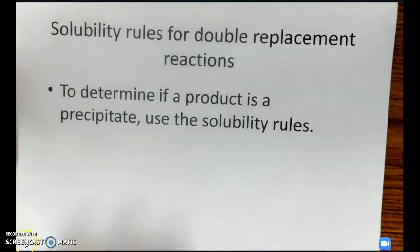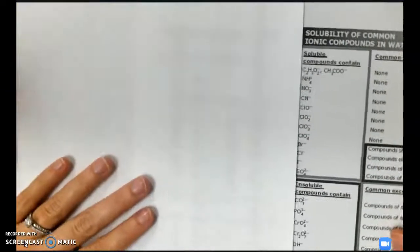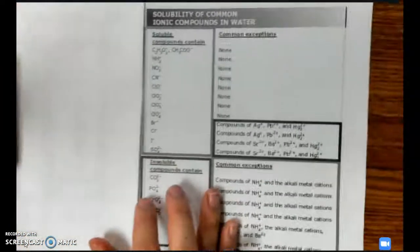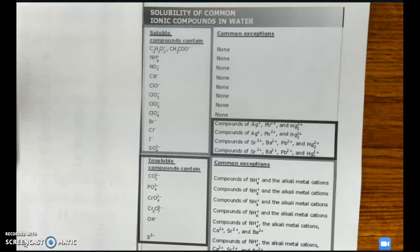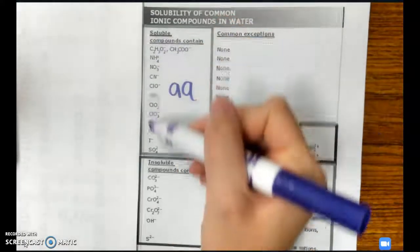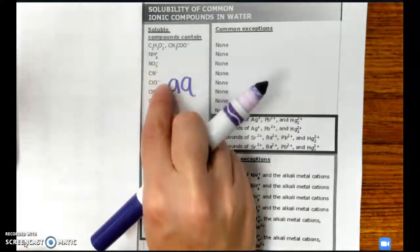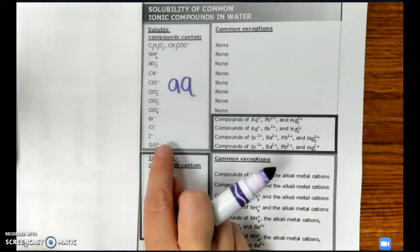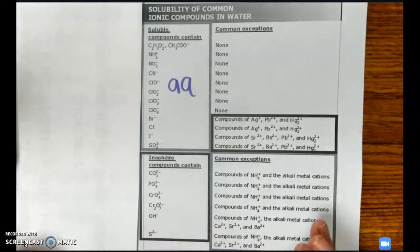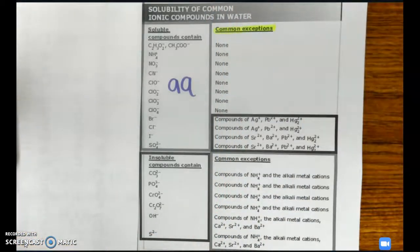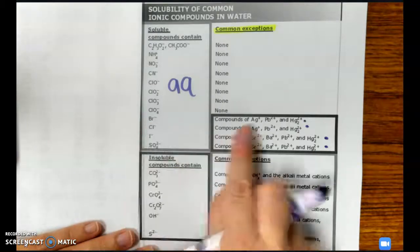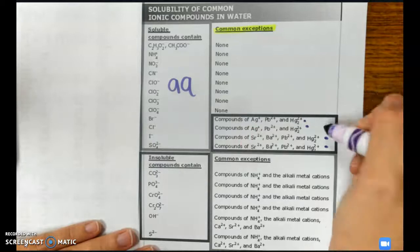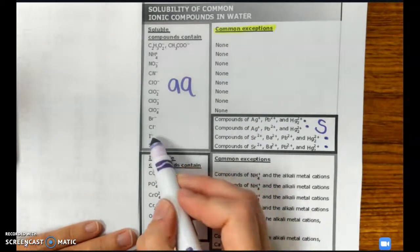If you go to the back of your periodic table, you should see a solubility chart. The top section says 'soluble compounds contain.' Soluble means aqueous — it can dissolve in water. So compounds containing ammonium, nitrate, cyanide, all chlorates, bromine, chlorine, iodine, and sulfate are all aqueous. Over here it says 'common exceptions' — an exception breaks the rule. For bromine, chlorine, iodine, and sulfate, if they are bonded with certain ions, they are not aqueous and would form a precipitate.